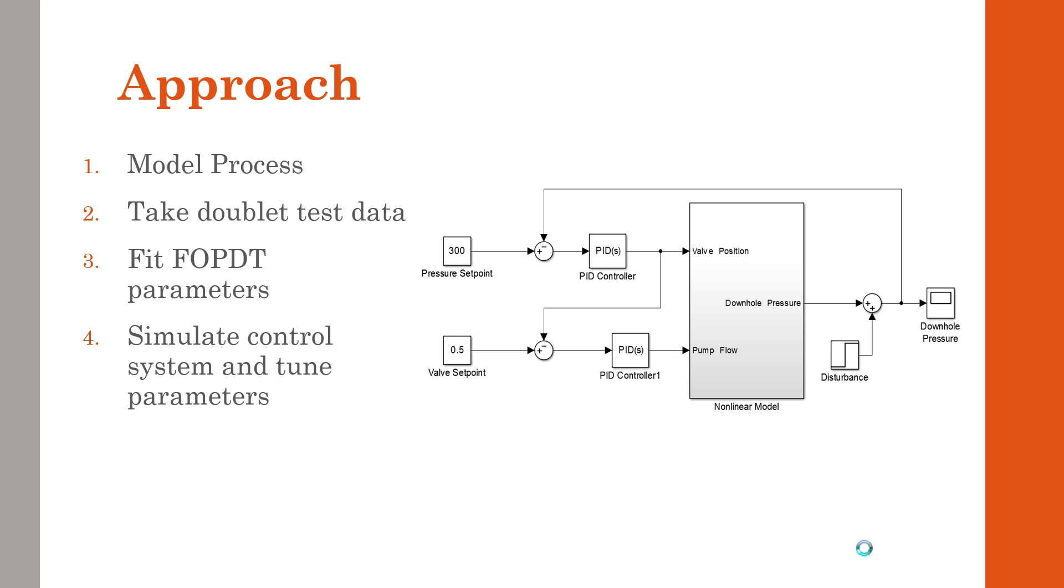To find our control parameters, we took doublet test data and fit those tests to first order plus dead time parameters, from which we could use our tuning rules to find our process control parameters, like our control gain and control time constant. We then implemented those controls into a simulated control system and hand tuned the responses to get the best response we could find.